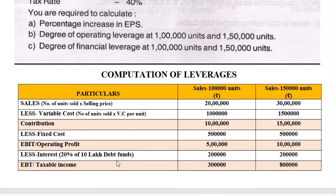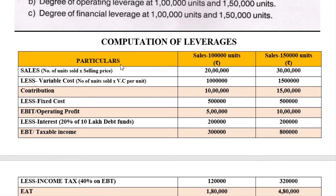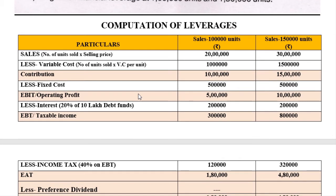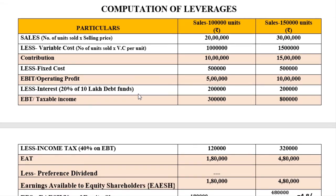Next, deduct tax at 40 percent. Case 1: 40 percent on EBT of 3 lakh equals rupees 1 lakh 20,000. So 3 lakh minus 1 lakh 20,000 gives rupees 1 lakh 80,000. Case 2: 40 percent on EBT of 8 lakh equals rupees 3 lakh 20,000. So 8 lakh minus 3 lakh 20,000 gives rupees 4 lakh 80,000.